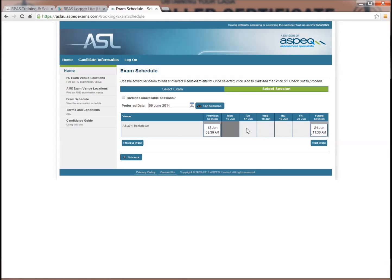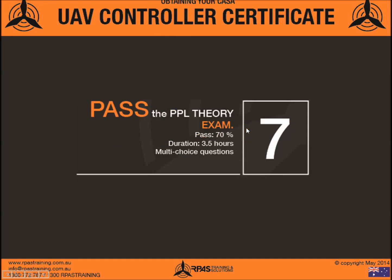Step 7: pass the PPL theory exam. The exam is around three and a half hours with about 55 to 60 multiple choice questions. Provided you have done the review questions from our course or worked through the Bob Tate book, you should be fine. You are allowed to sit the exam multiple times with a one-week lockout period, but you will have to repay the fee of around $160 if you need to re-sit.